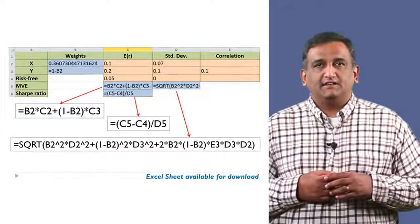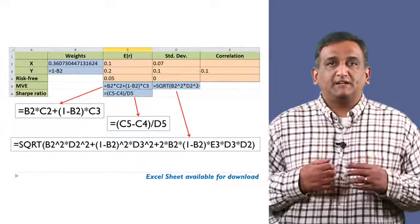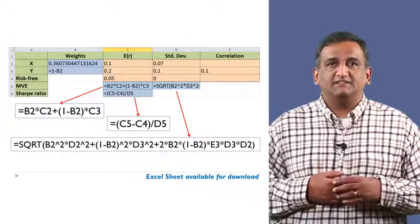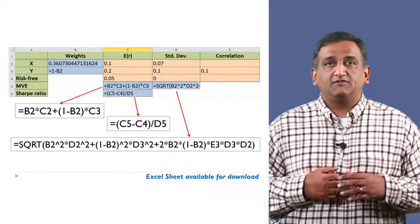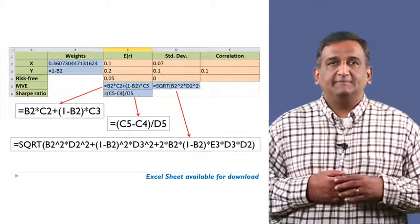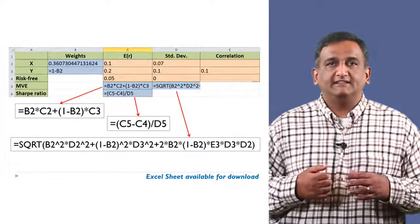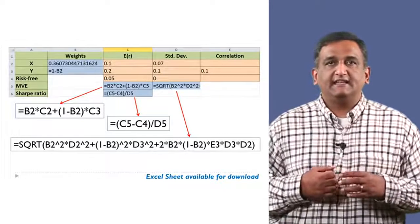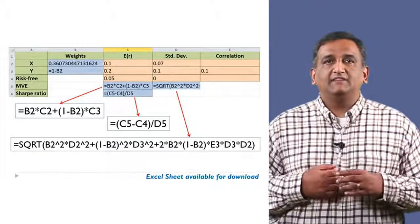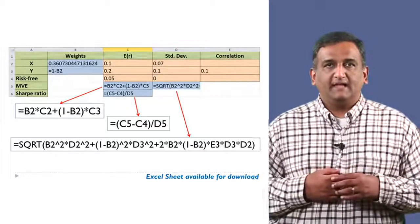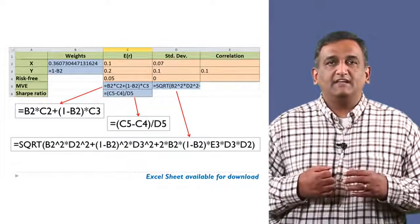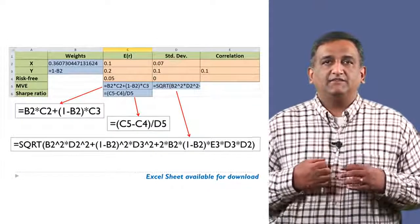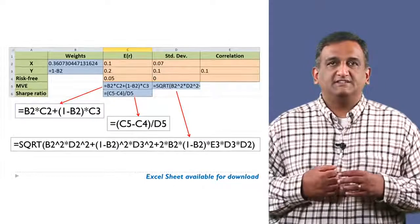We can solve for the weights using Excel. Enter the expected return for X in cell C2, its standard deviation of returns in cell D2, the expected return for Y in cell C3, and its standard deviation of returns in cell D3. Also enter the correlation coefficient between the returns in cell E3, and the risk-free return in cell C4. Enter the formula for the MVE portfolio's expected return in cell C5 and the formula for its standard deviation in cell D5.